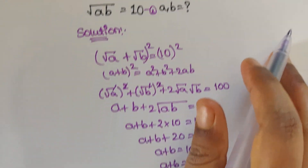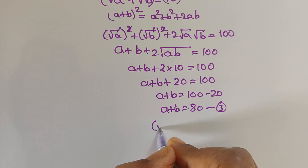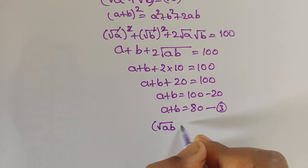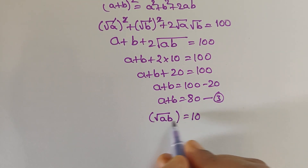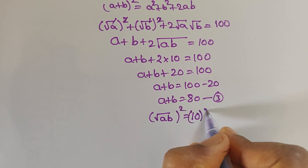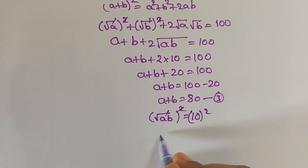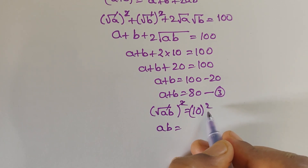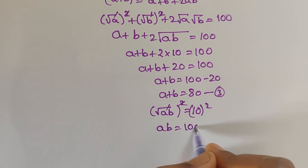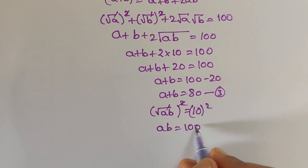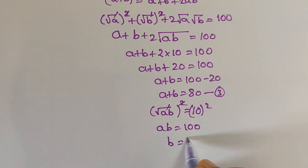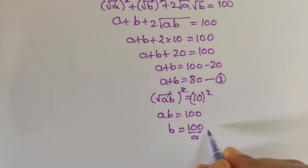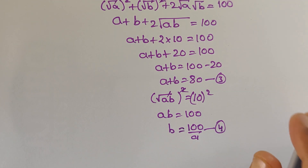Now we take the second equation: square root of ab equals 10. Apply squares on both sides. The square root cancels and we get ab equals 100, since 10 squared equals 100. From this we can find b: b equals 100 divided by a. Let us call this equation 4.